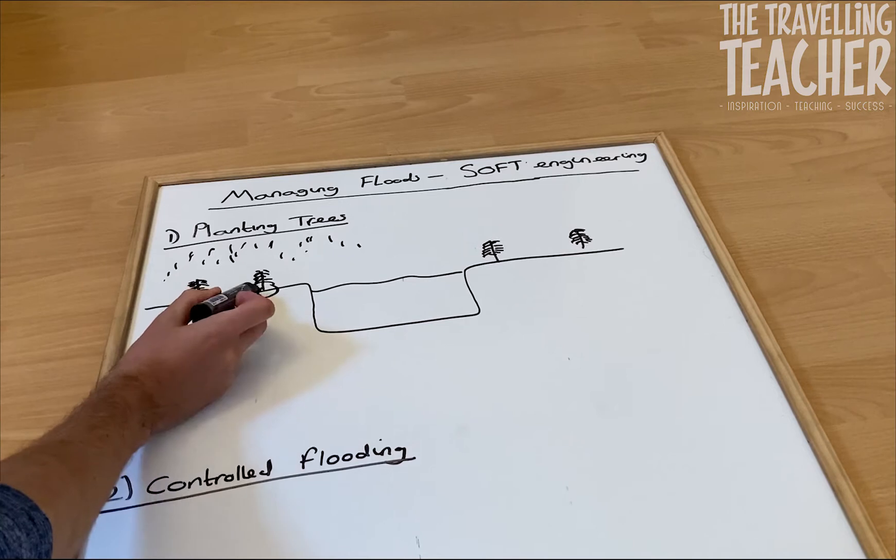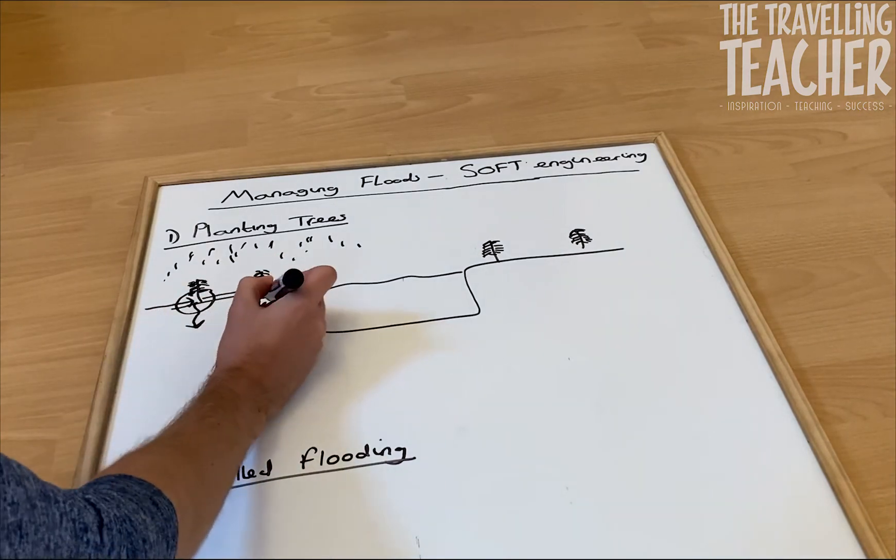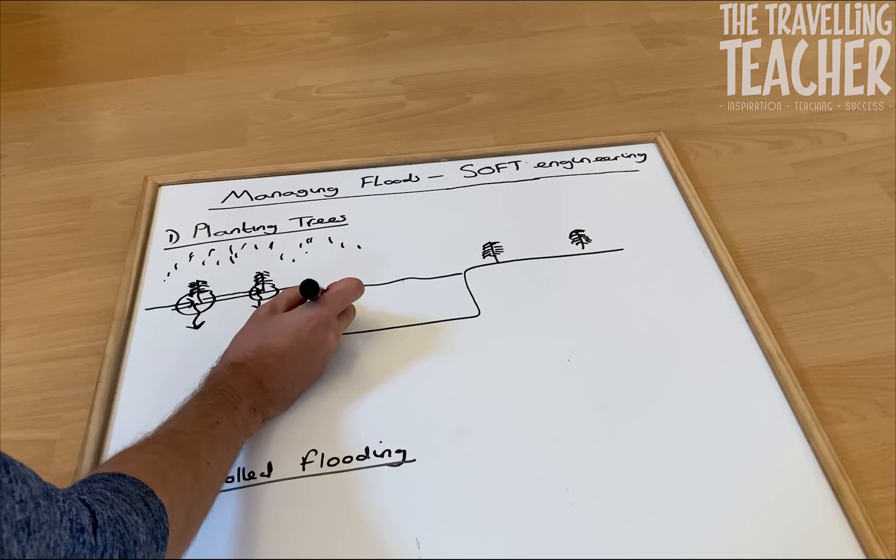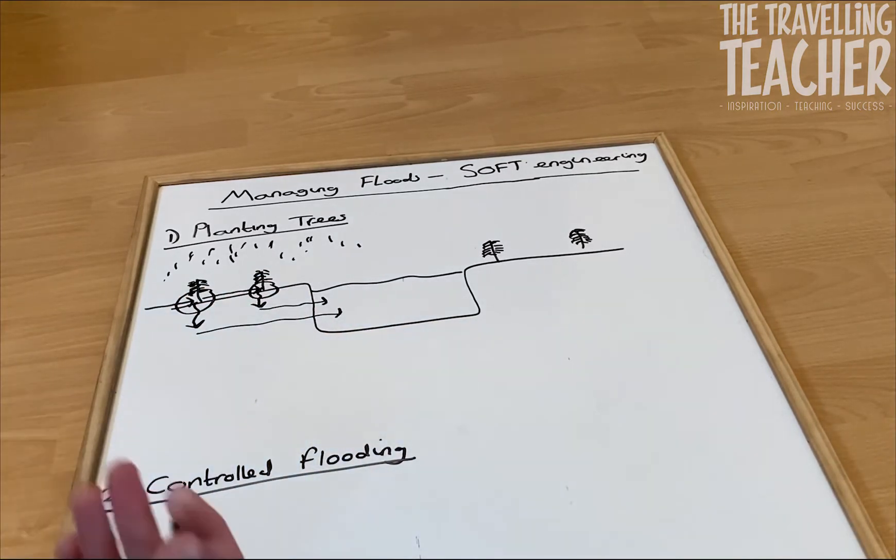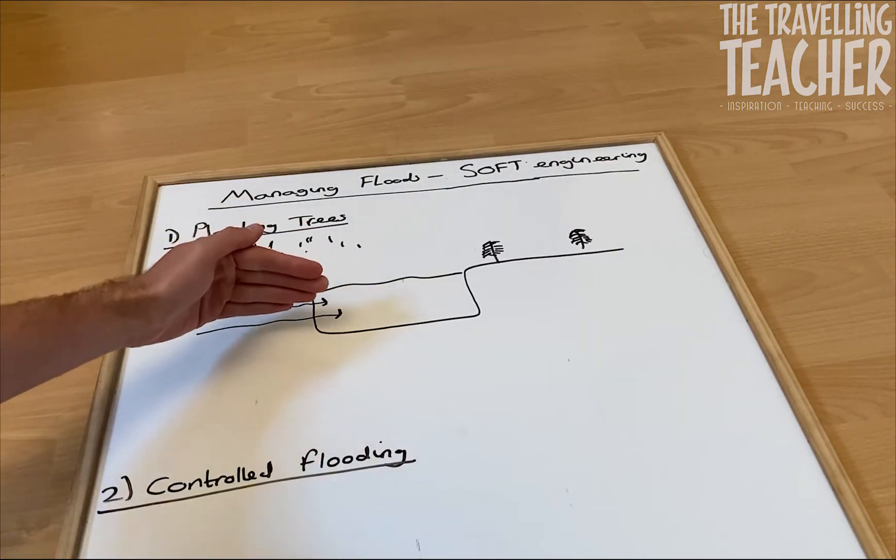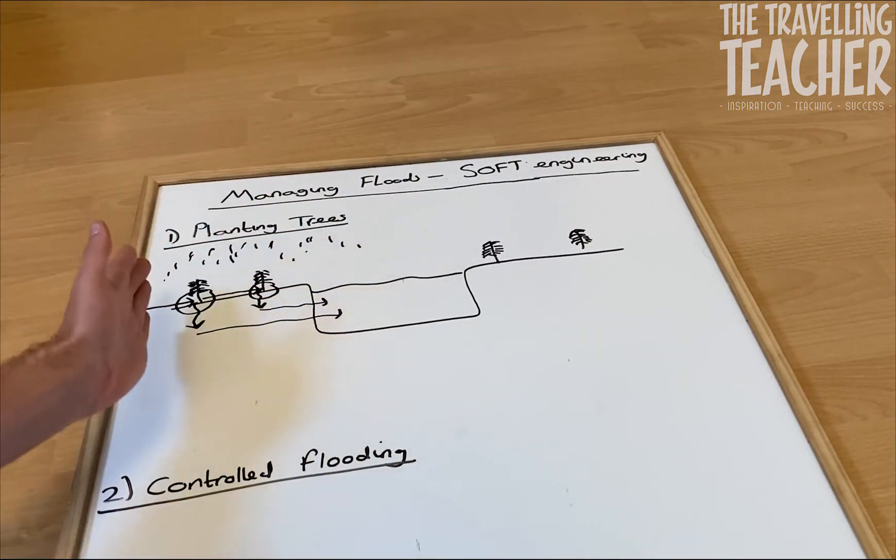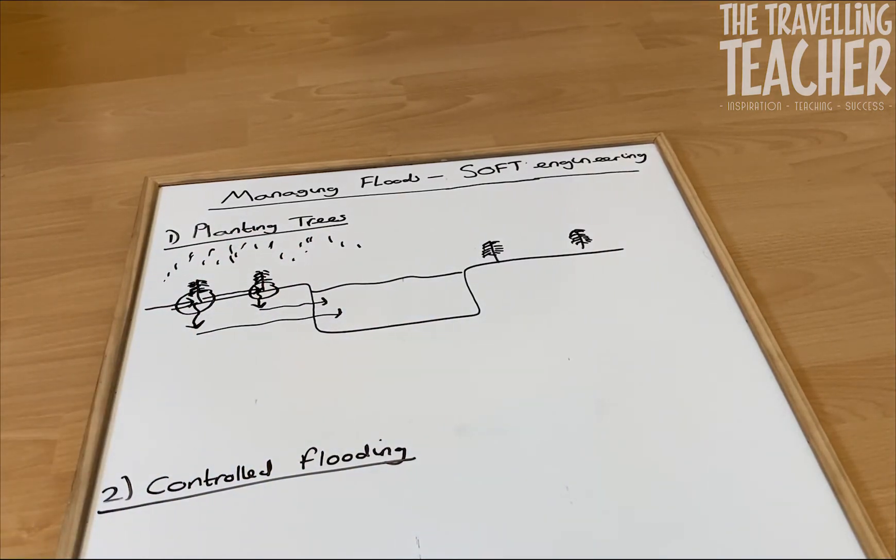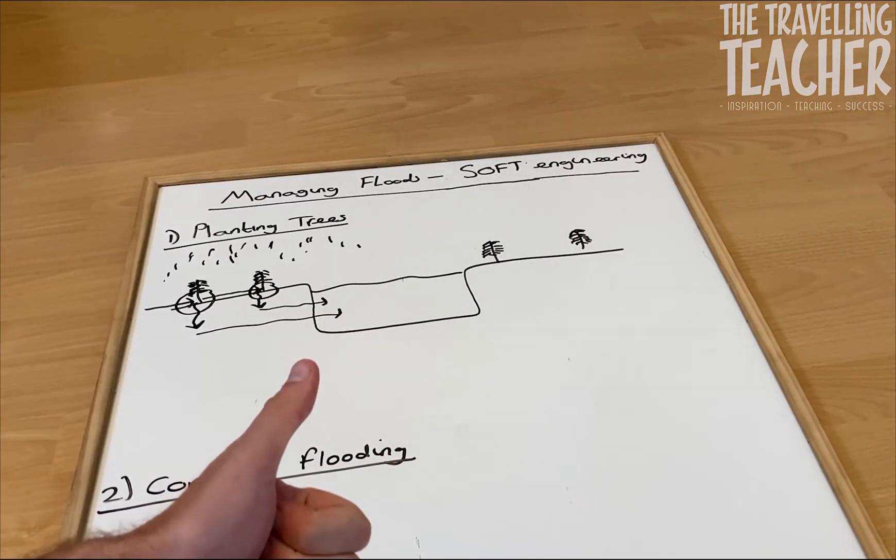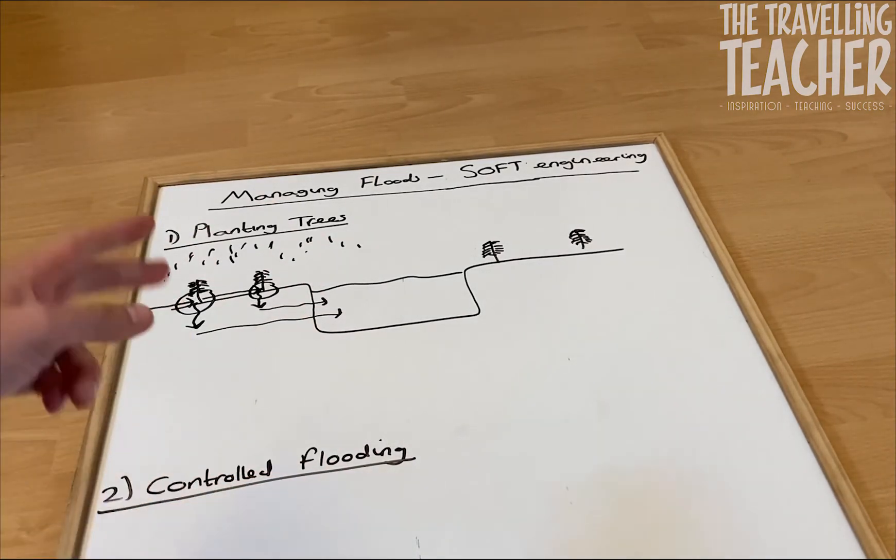And once that rainfall has infiltrated under the ground, it works its way back to the river much more slowly. So of course, this river level here is not going to rise really quickly, because water's going back into the river channel at a slower rate. And that's it. It's as simple as that. So more trees leads to more interception, leads to more infiltration, and slower surface runoff. So the water level does not rise quickly.